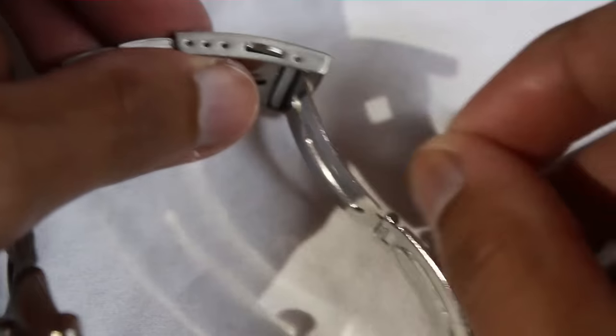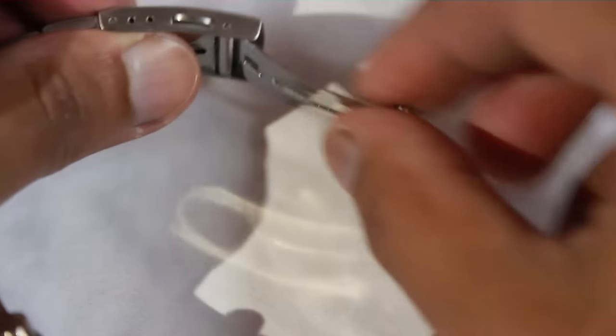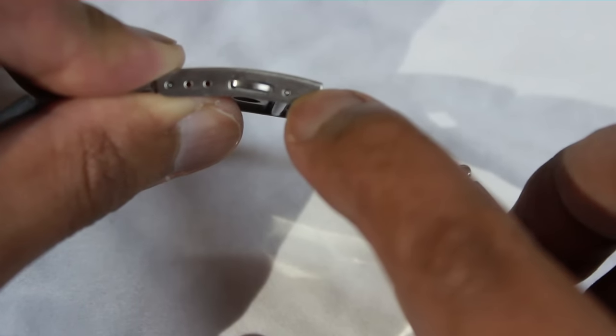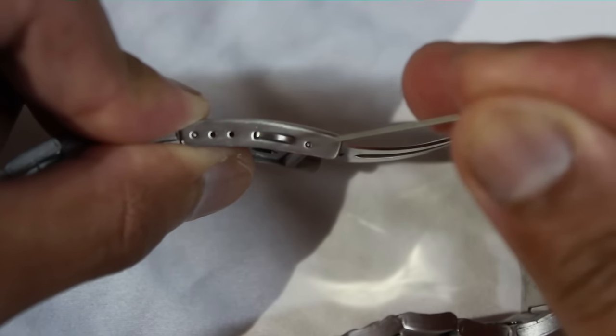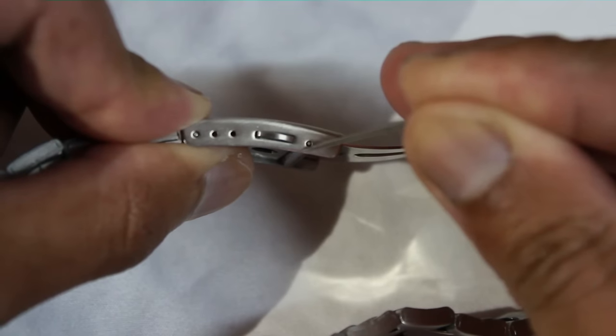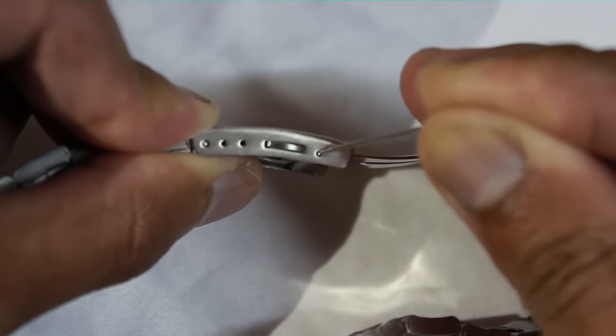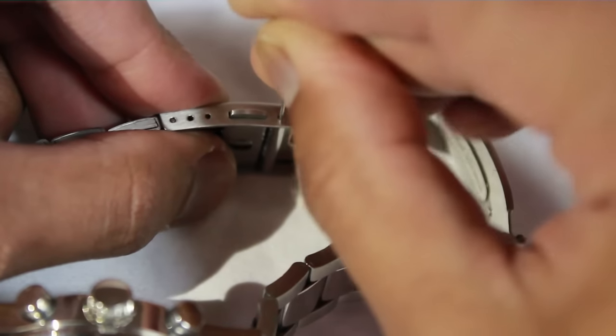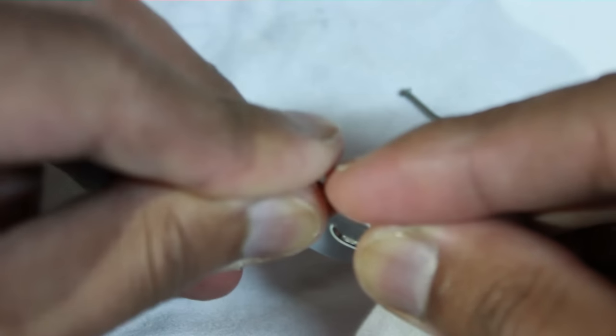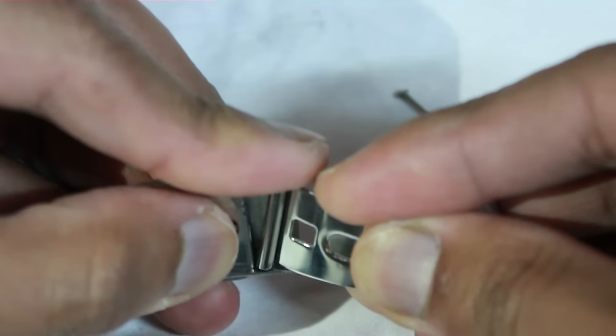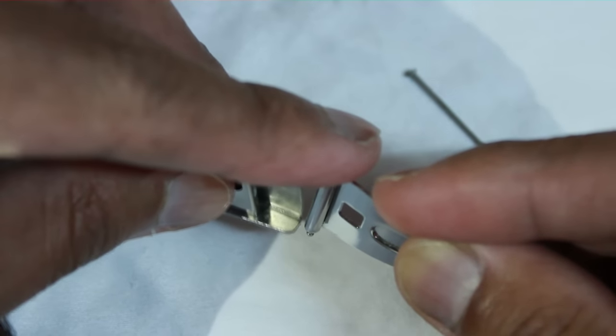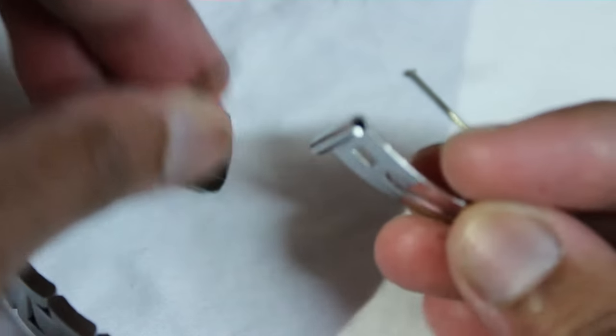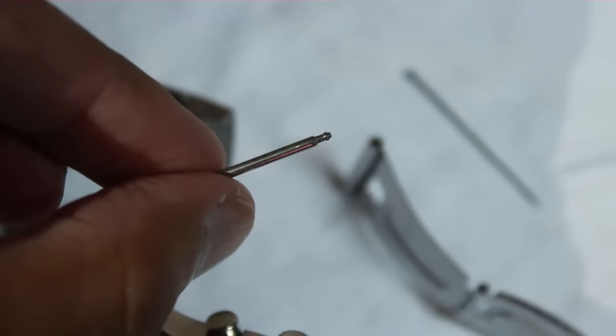Okay, so the first thing you want to do is take this band apart. We'll take this pin off that's holding it together. So use your needle and just insert it there and push down. It will just slide out once it's unlocked. So there's your pin that's holding it together.